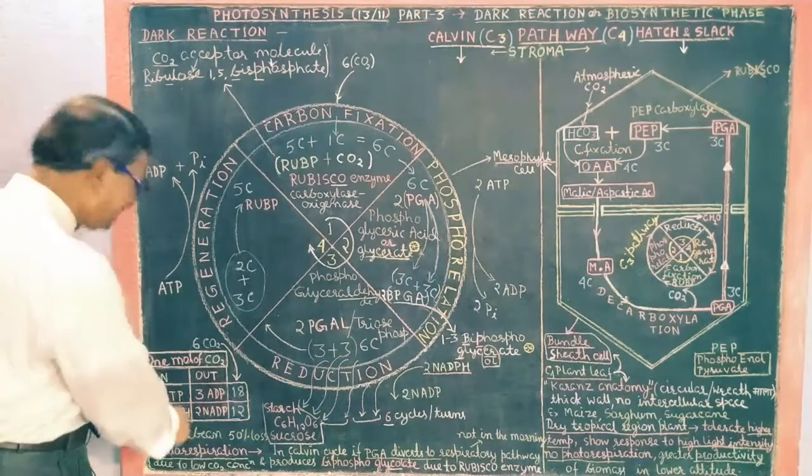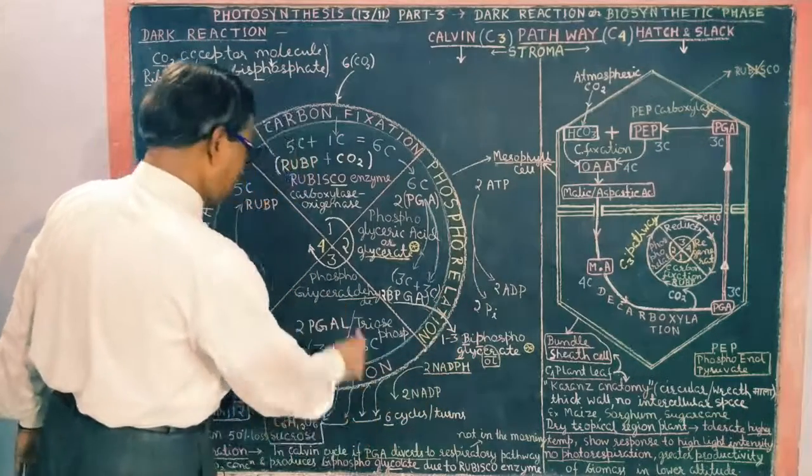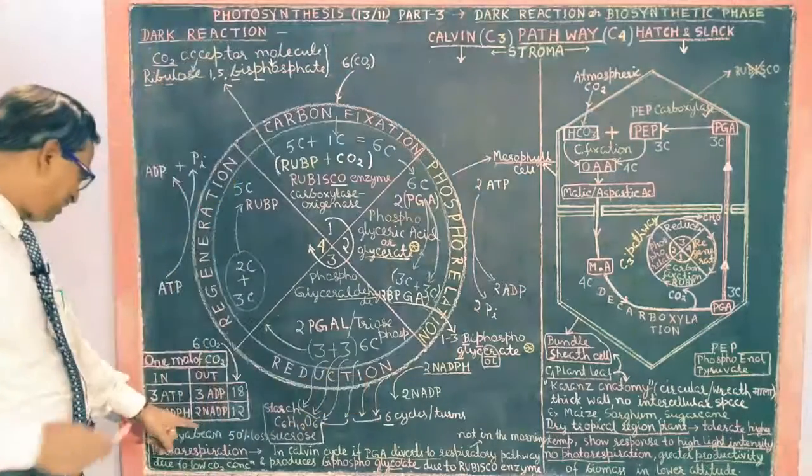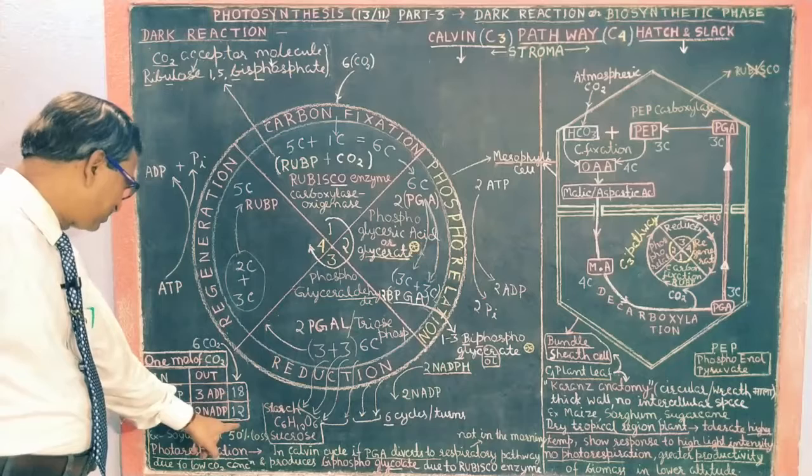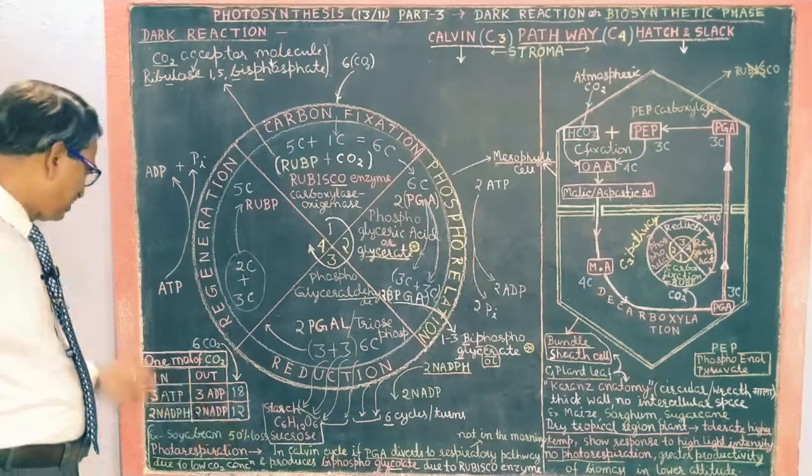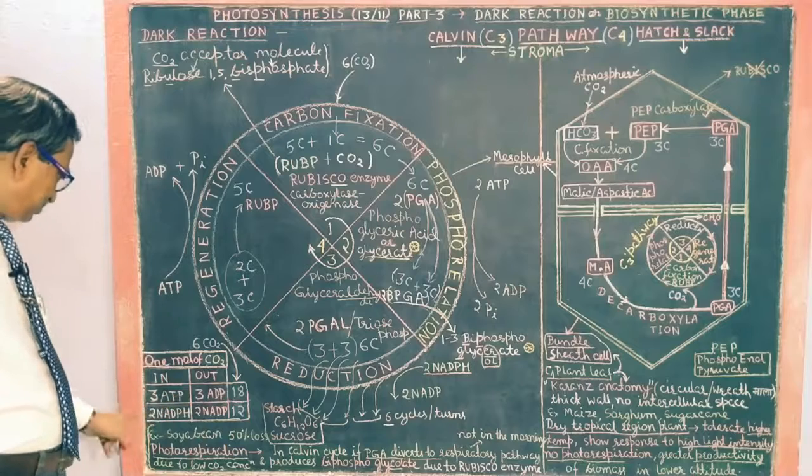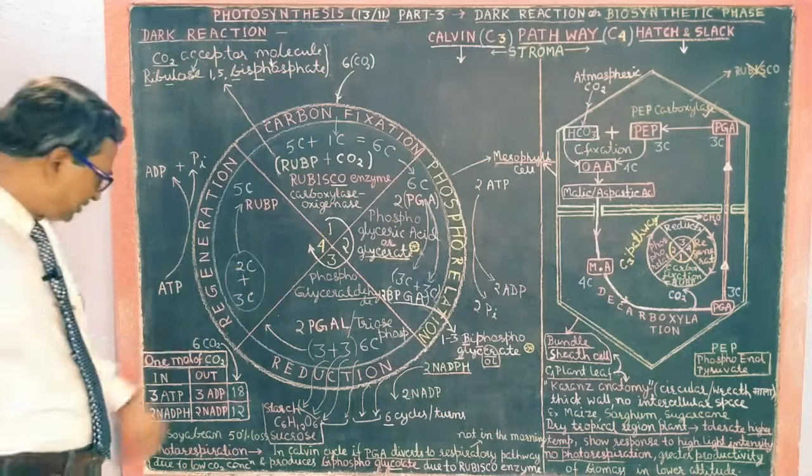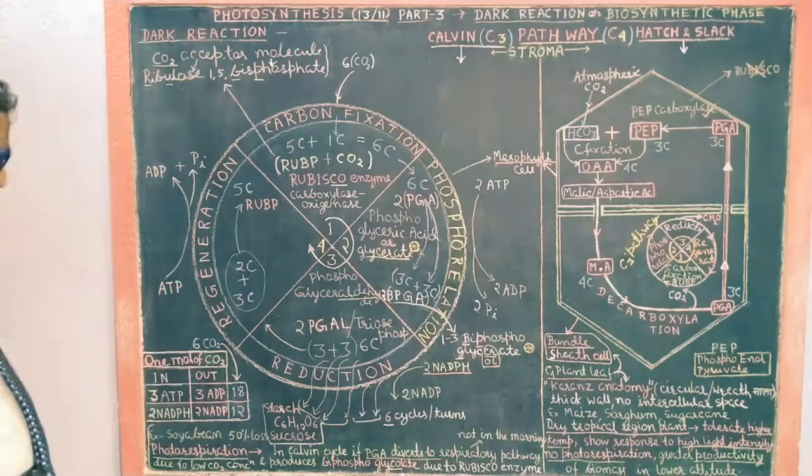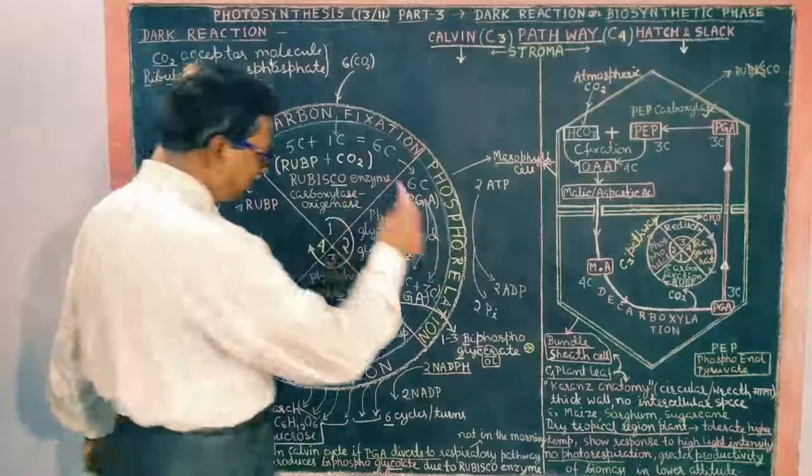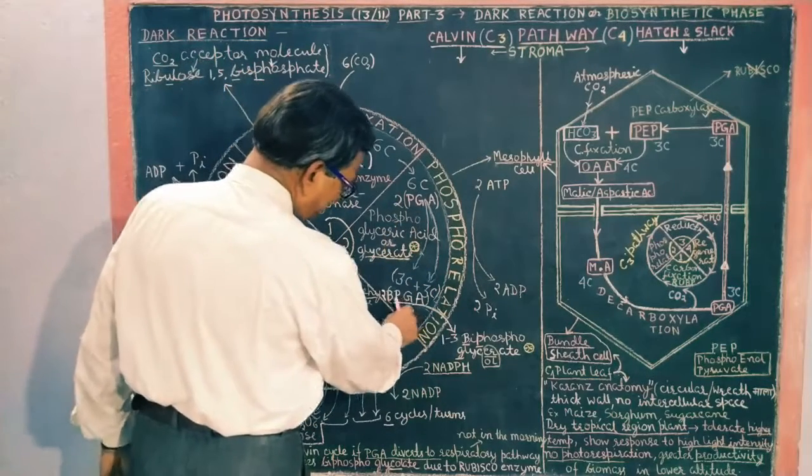And the NADPH, which has 2 molecules here. This is NADPH, which is used in reduction. So if there are 6 molecules here, then there will be 12. In one molecule of CO2, there will be 3 ATP and 2 NADPH. So in total for 6 molecules, there will be 18 ATP and 12 NADPH.